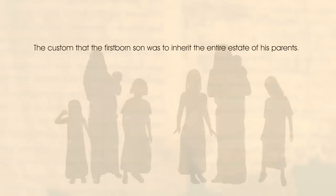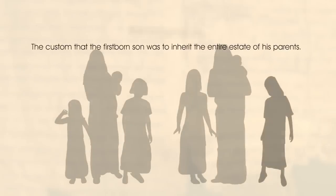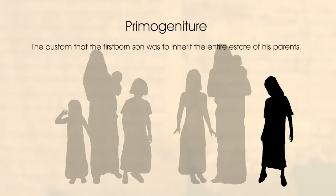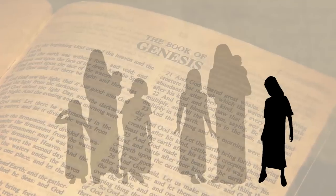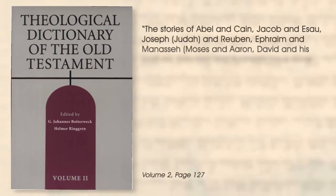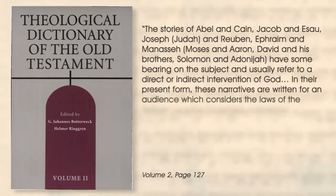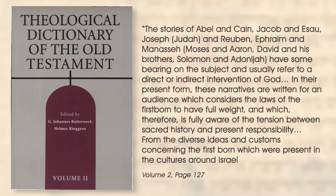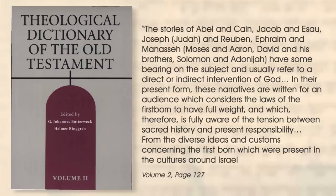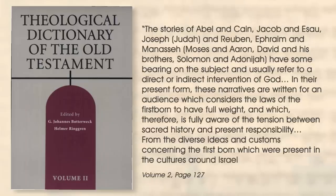In the ancient Near East, a custom known as primogeniture occurred, which was the custom that the firstborn son was to inherit the entire estate of his parents. However, the book of Genesis spends a lot of time denouncing this practice along with polygamy. The Theological Dictionary of the Old Testament remarks that the stories of Abel and Cain, Jacob and Esau, Joseph and Reuben, Ephraim and Manasseh have some bearing on the subject and usually refer to a direct or indirect intervention of God. In their present form, these narratives are written for an audience which considers the laws of the firstborn to have full weight, and which therefore is fully aware of the tension between sacred history and present responsibility.